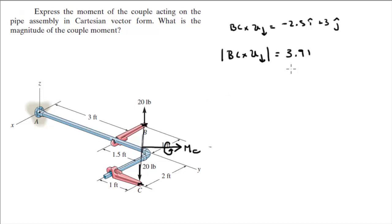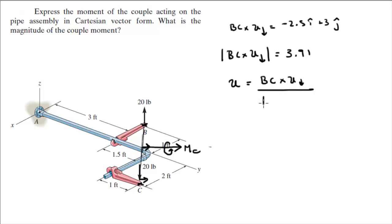Now that we have that, we can find the unit vector we're looking for — remember, unit vectors have no origin, they just have direction. The unit vector equals the Cartesian vector divided by its magnitude: (−2.5i + 3j) / 3.91, which comes out to −0.640i + 0.768j, with no k component.